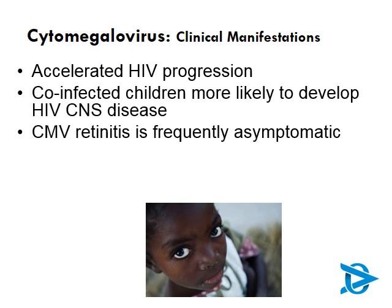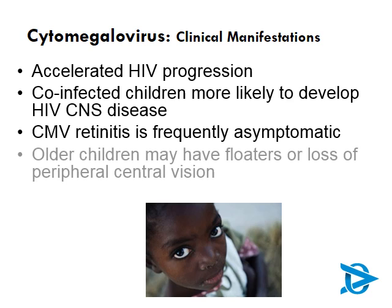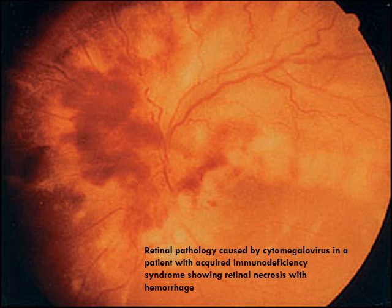CMV retinitis, which we often see in adults, is frequently asymptomatic in the early stages, and children might not report abnormalities. Older children may have floaters or loss of peripheral or central vision, but may not necessarily report it to their teachers or other adults. This is a picture of retinal pathology caused by cytomegalovirus — classically you have areas of retinal necrosis with hemorrhage, the typical picture described as melted cheese and tomato sauce.